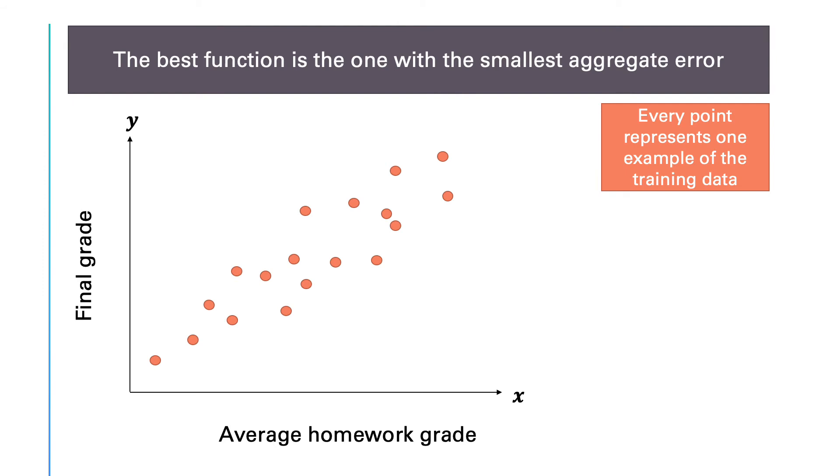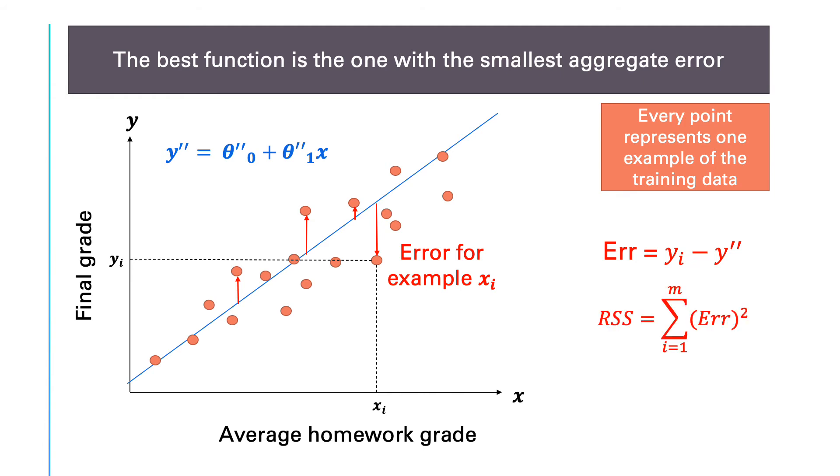Let's say we have this other function and as before, we can define the error as the residual or discrepancy between yᵢ and y'. These residuals can be positive or negative. So, to get the aggregate error, we square them to make them positive and then sum them together.